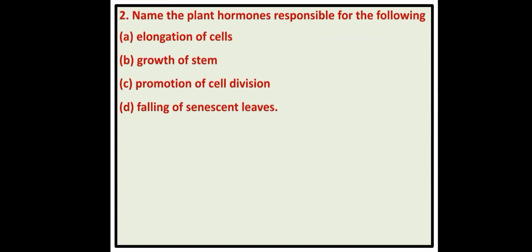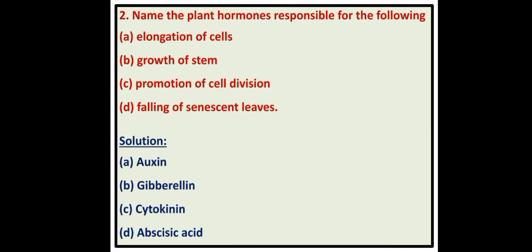Let's see the next question: Name the plant hormones responsible for the following. Auxin is the hormone responsible for the elongation of cells and the lengthwise growth of the plant. Gibberellin is responsible for growth of the stem. Cytokinin promotes cell division. Abscisic acid is responsible for the falling of senescent leaves.